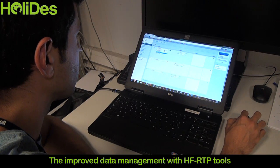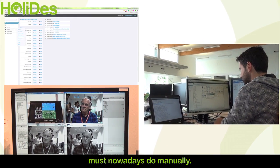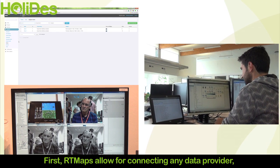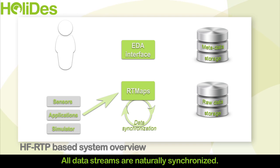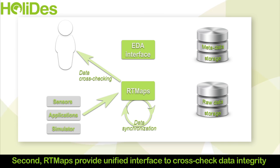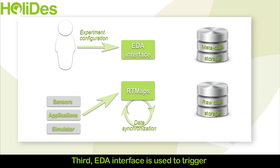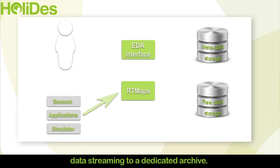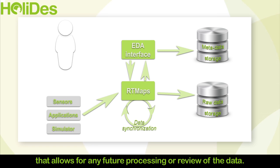The improved data management with HF RTP tools automates three error-prone steps that each HF expert must nowadays do manually. First, RT Maps allow for connecting any data provider, being it a sensor, application or hardware platform — all data streams are naturally synchronised. Second, RT Maps provide a unified interface to cross-check data integrity before the experimenter can start data collection. Third, the EDA interface is used to trigger data streaming to a dedicated archive, and meta information is automatically created and stored by EDA, allowing for any future processing or review of the data.